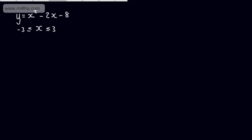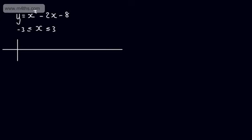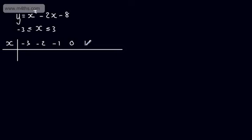To plot this, we would get a table of values, taking each x value and finding the corresponding y value. So let's put in x as the independent variable — that's the one we're choosing — with values: minus 3, minus 2, minus 1, 0, 1, 2, and 3. We then find the corresponding y coordinate, which is the dependent variable.